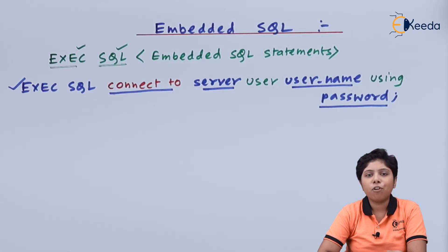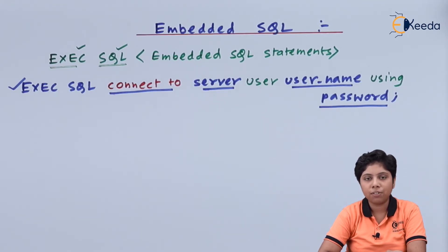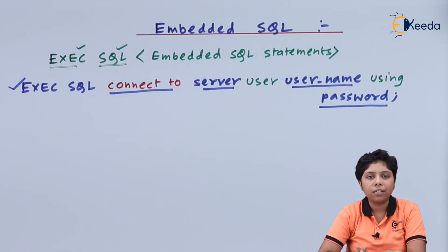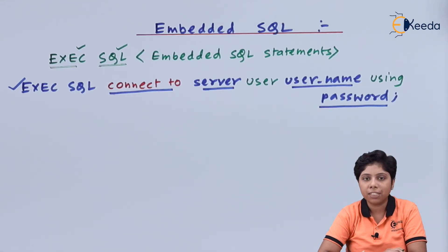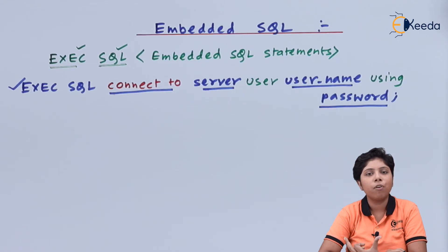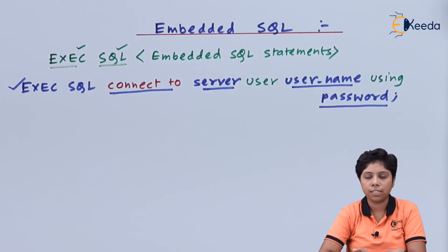Now if we want to use any variable of the host language in the Embedded SQL statement, we can do that by providing a colon prior to the variable name of the host language. We can use all of that inside an EXEC SQL declare section. After that we can declare the variable, and after that we put END EXEC SQL declare section.